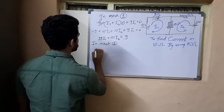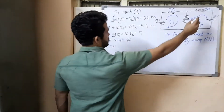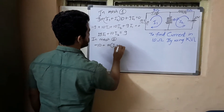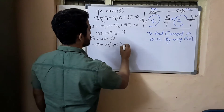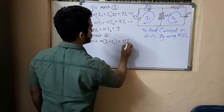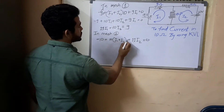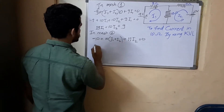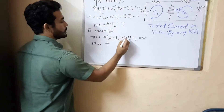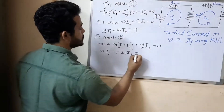Tracing mesh 2 opposite to I2: minus 10 volts plus 10·(I1 + I2) plus 11·I2 equals zero. Simplifying: 10·I1 plus 10·I2 plus 11·I2 equals 10, which gives the second equation: 10·I1 plus 21·I2 equals 10.